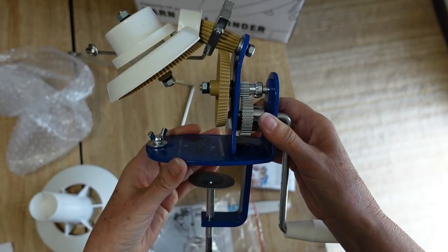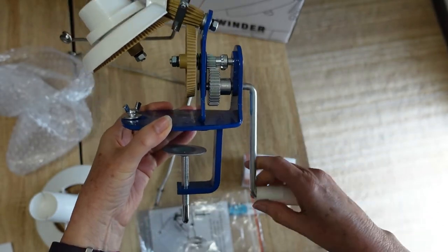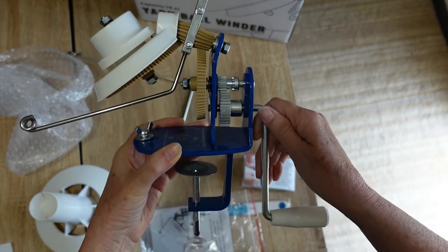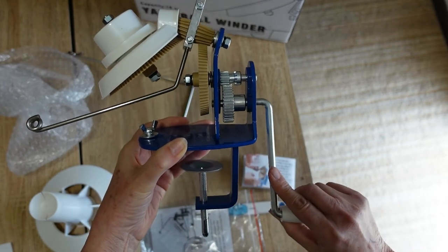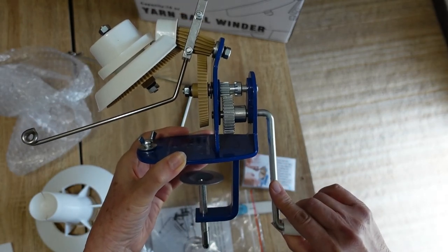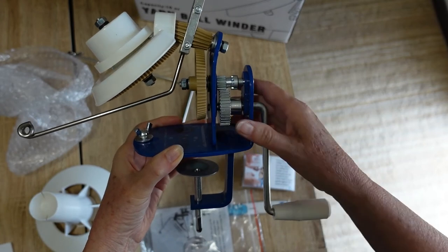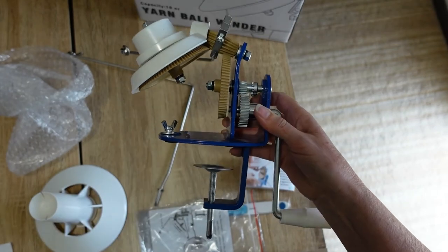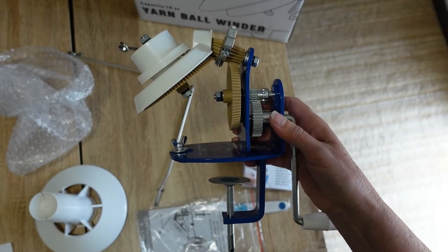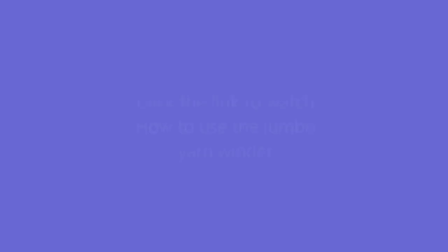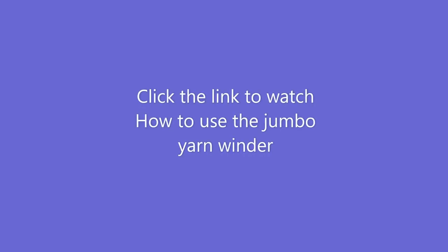There you have it. The LAMXD Jumbo Yarn Winder. Highly recommend. You can be assured I will be attaching this to my bench very soon and winding some yarn because I still have a lot of yarn to wind into cakes. Thanks for watching. I hope that was helpful for you. Bye. Thank you so much.